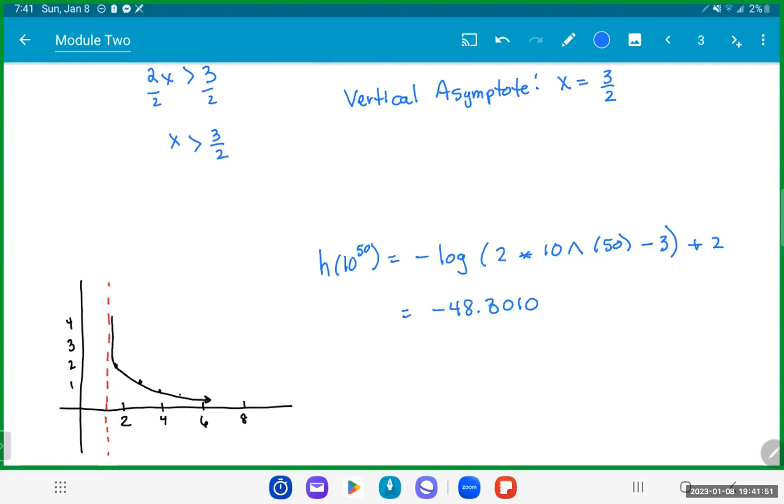And so why that is important is because as x approaches positive infinity, right, so we're getting larger and larger values of x, then our log of x approaches positive infinity. And thus, our h of x approaches negative infinity, so the solution of our whole entire function goes to negative infinity.